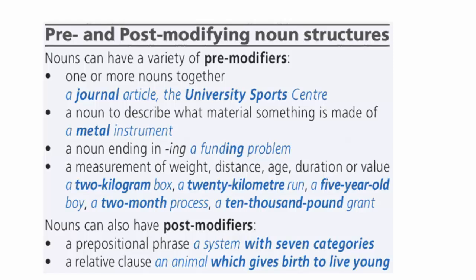For example: a 2kg box, a 20km run, a 5-year-old boy. Nouns can also have post-modifiers: a prepositional phrase, for example, a system with seven categories; or a relative clause, for example, an animal which gives birth to live young.